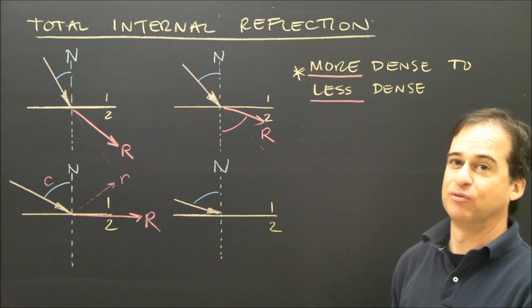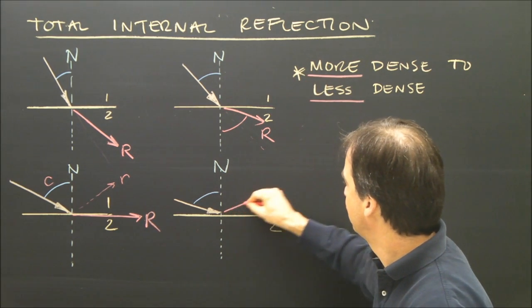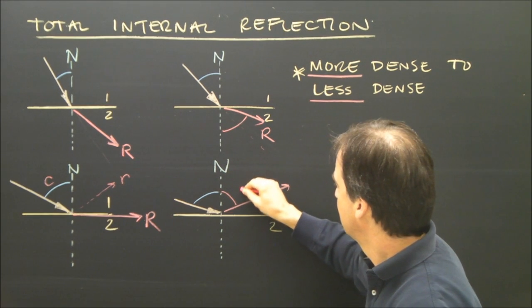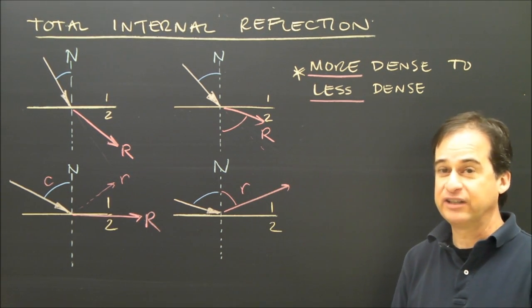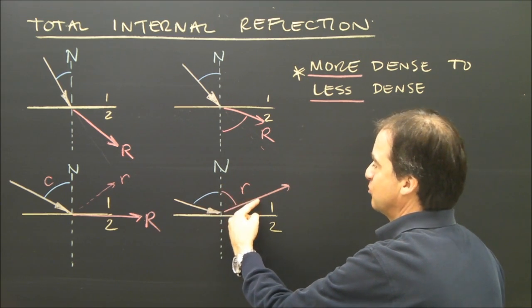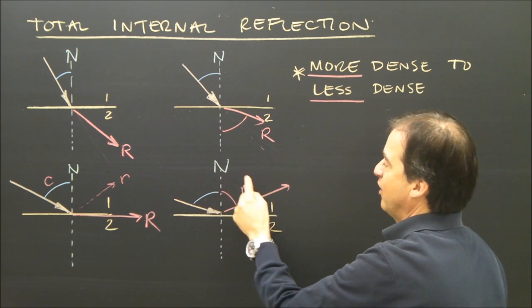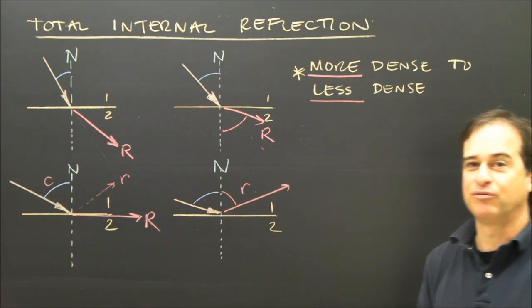That's why we use total internal reflection. The entire light ray basically bounces off the surface, and you have the law of reflection take over. If this is 75 degrees, then this will be 75 degrees. I haven't drawn it quite right, but you get the idea. This is 75. This is 75. It's totally reflected.